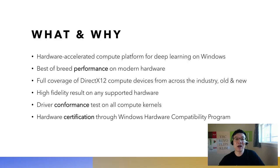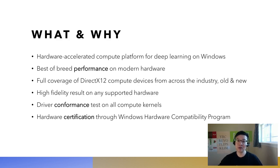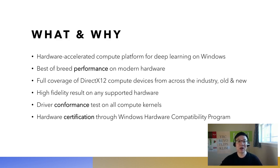DirectML is a hardware accelerated compute API for deep learning on Windows. Windows is a very diverse ecosystem of over a billion devices now running Windows 10, with literally hundreds of different graphics chipsets and thousands of different driver versions from hardware vendors across the industry. It is fundamentally challenging to build an API that could scale across this broad variety of hardware, from a compute stick, a laptop, to a power workstation and server.